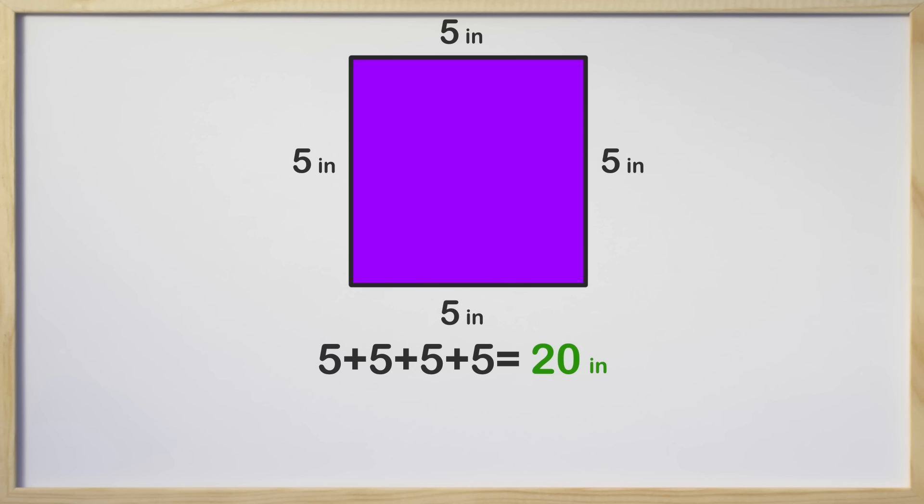Because all sides are equal we could have used multiplication to find the answer as well. For example we could have multiplied the amount of sides 4 times the measurement of one side which is 5 inches. 4 times 5 equals 20. 20 inches just like adding them all up. Awesome!